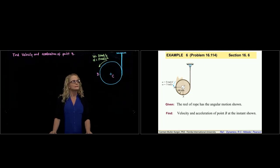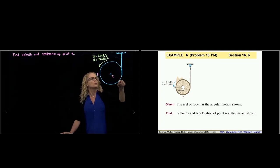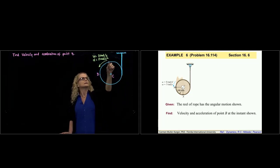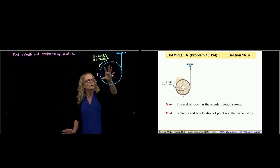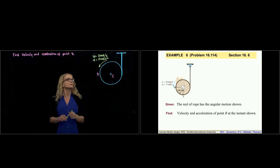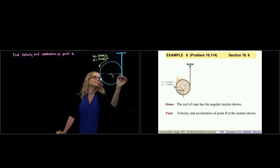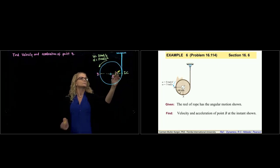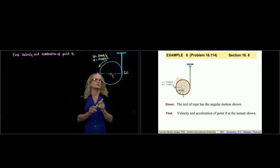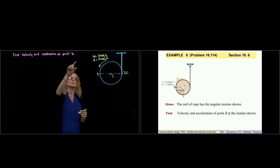Here we have a disc that is rolling out of a cord. You can imagine that the cord is surrounding the disc and it's rolling down. So the instantaneous center of rotation of this disc will be this one. It's rolling with respect to this point. And we are asked to find the velocity and the acceleration of point B.